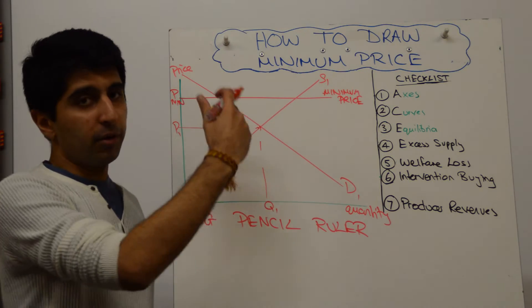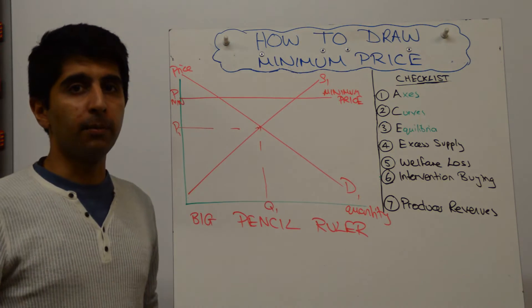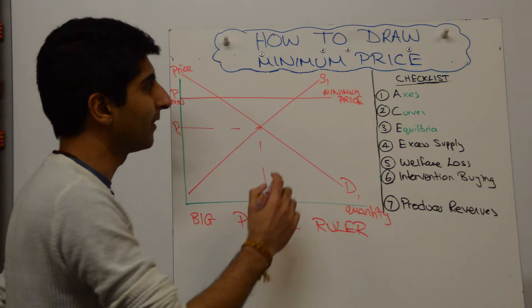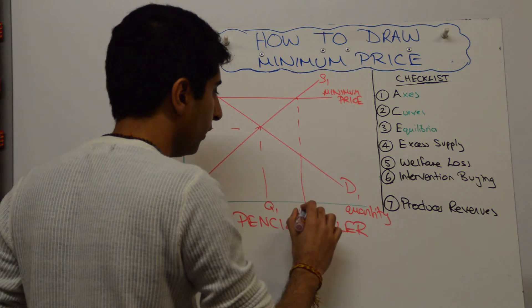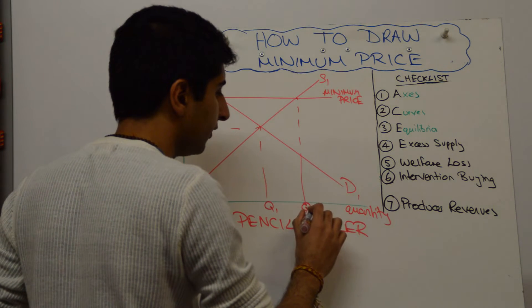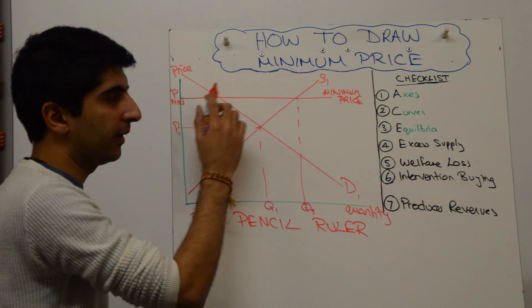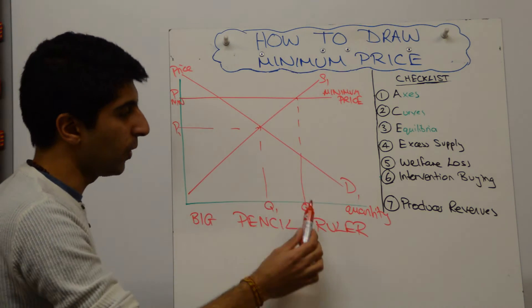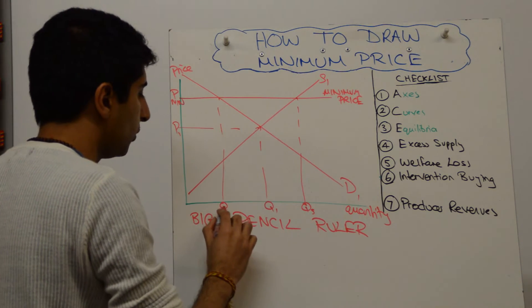Next thing, if the price has been distorted away from equilibrium, we need to show the impact on the demand and supply. So move across and take the quantities at the supply curve and the demand curve. So we call this one QS, and we call this one QD.